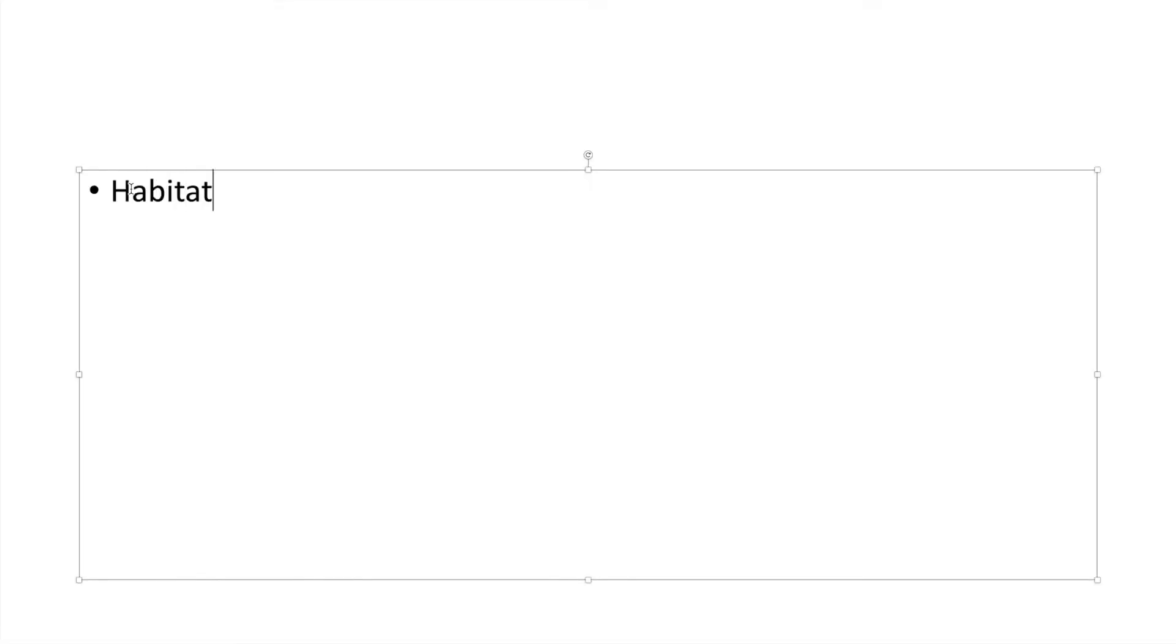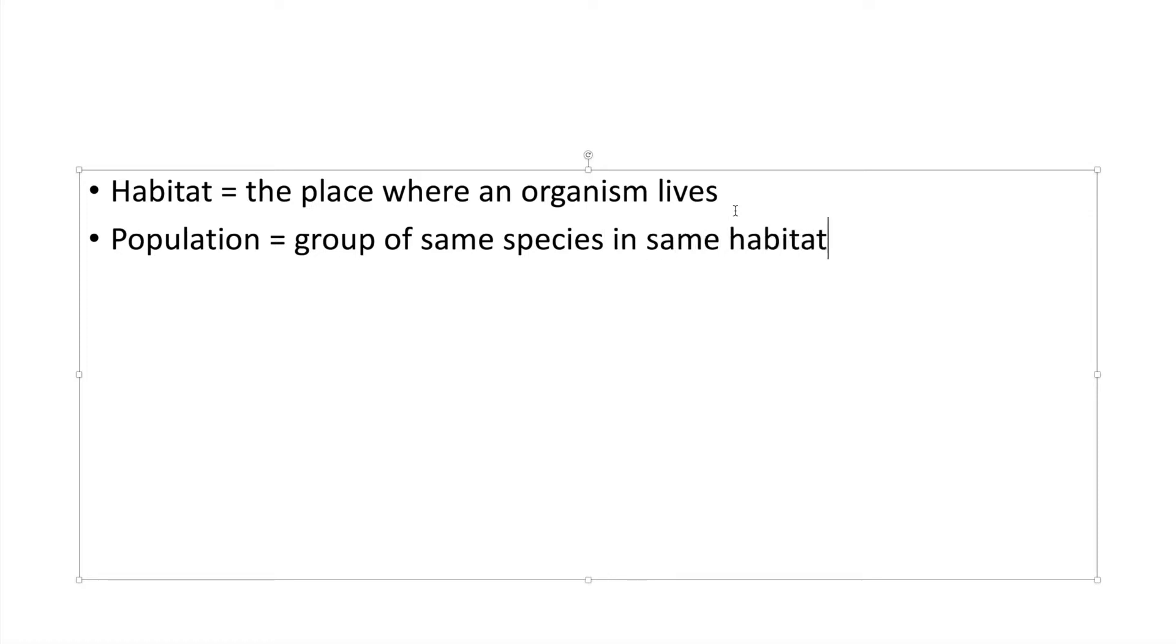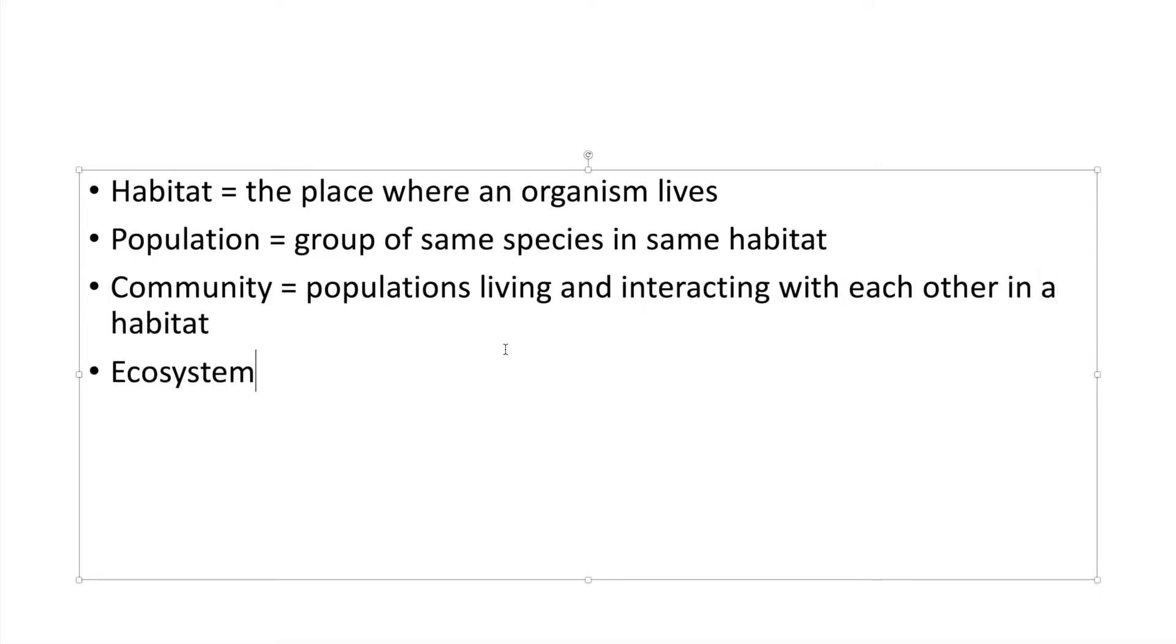Number one, habitat - the place where an organism lives. It could be in the tree, in the leaf litter, in the water, so on and so forth. And a population will be the number of the group of the same species in the same habitat. For example, talking about the number of birds or fish in the area. And the next is the community, a variety of different populations interacting together with one another in the same habitat. Ecosystem will be the interaction between all the organisms and also the non-living environment.